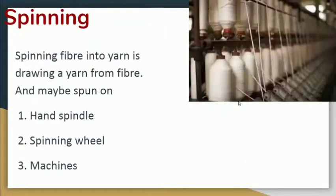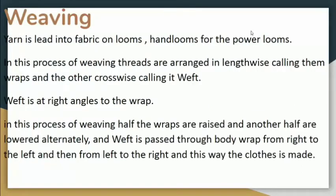Next is spinning, which means spinning fiber into yarn. Previously we get fiber and then we convert it into yarn. For yarn we use a hand spindle, spinning wheel, and machines. Here we have a spinning machine, and you have heard about the charkha, that is the spinning wheel, which was first used by Mahatma Gandhi.